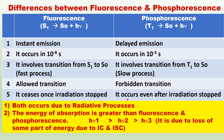Whereas phosphorescence occurs even after irradiation is stopped. There are phosphorescent clocks that are visible in the night — you can see the numbers and other markings at night. They are coated with phosphorescent materials. Phosphorescence occurs even after irradiation is stopped.